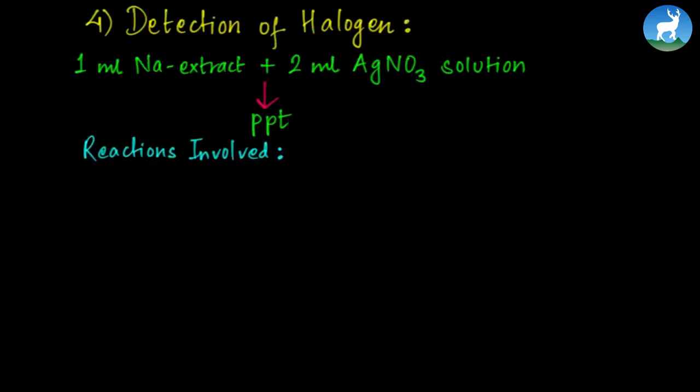The fourth step is detection of halogen. Take 1 mL sodium extract and add 2 mL of silver nitrate solution. Precipitate will form. The color of the precipitate determines which halogen is present.